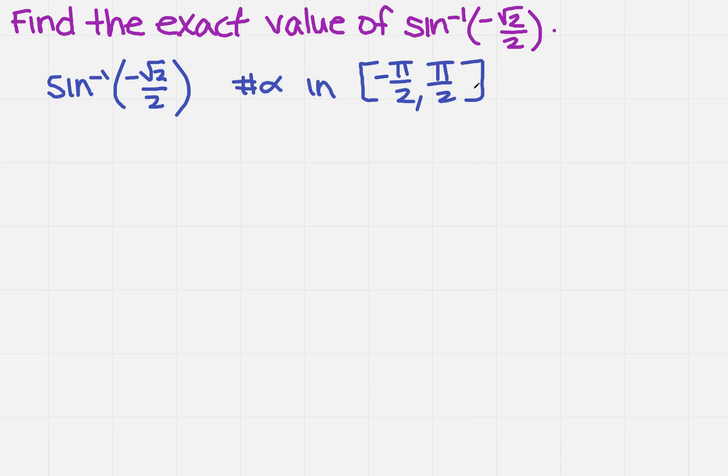What has to be true? The sine of alpha has to equal negative square root of 2 over 2. So, what value of alpha makes this a true statement?